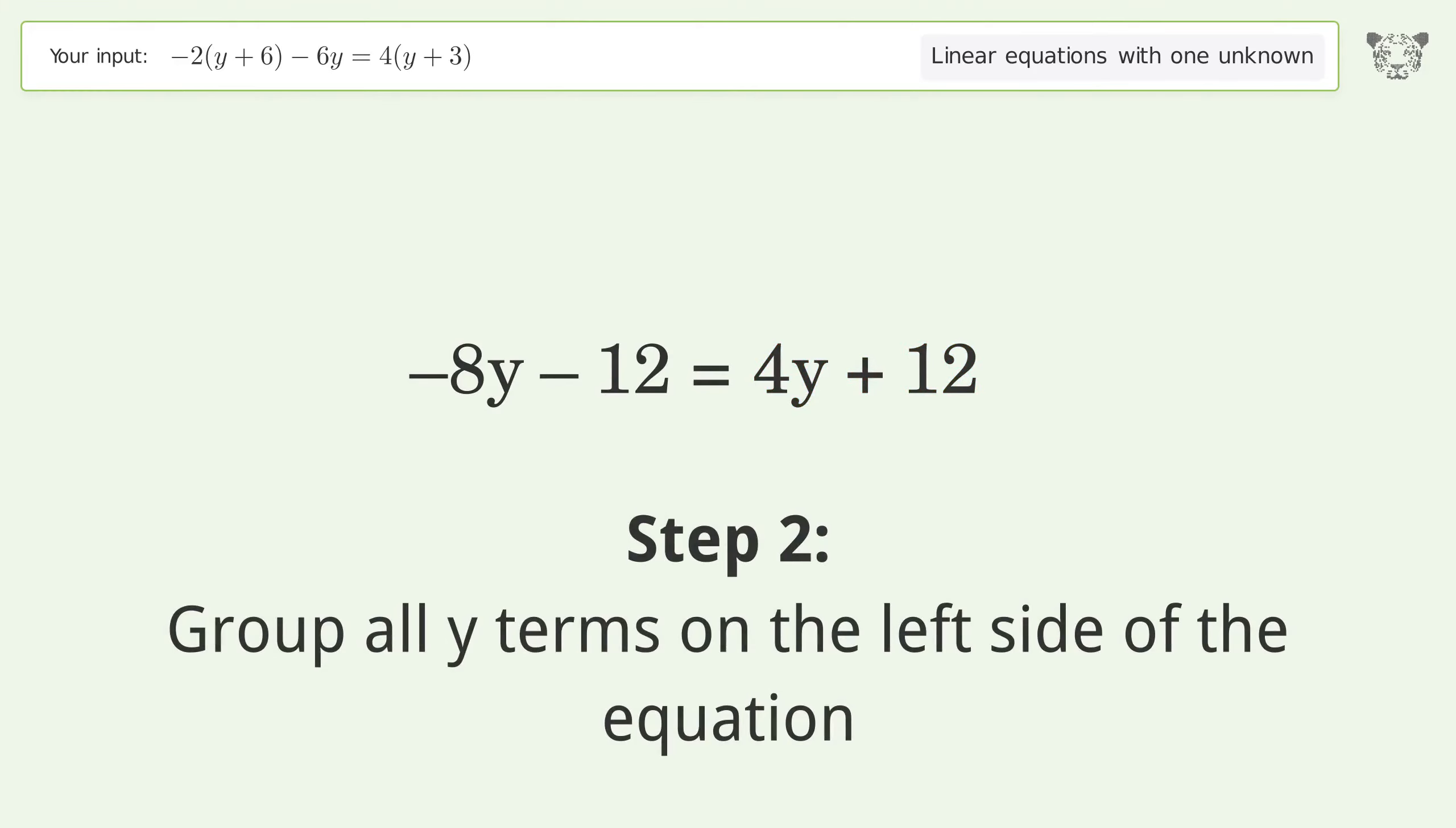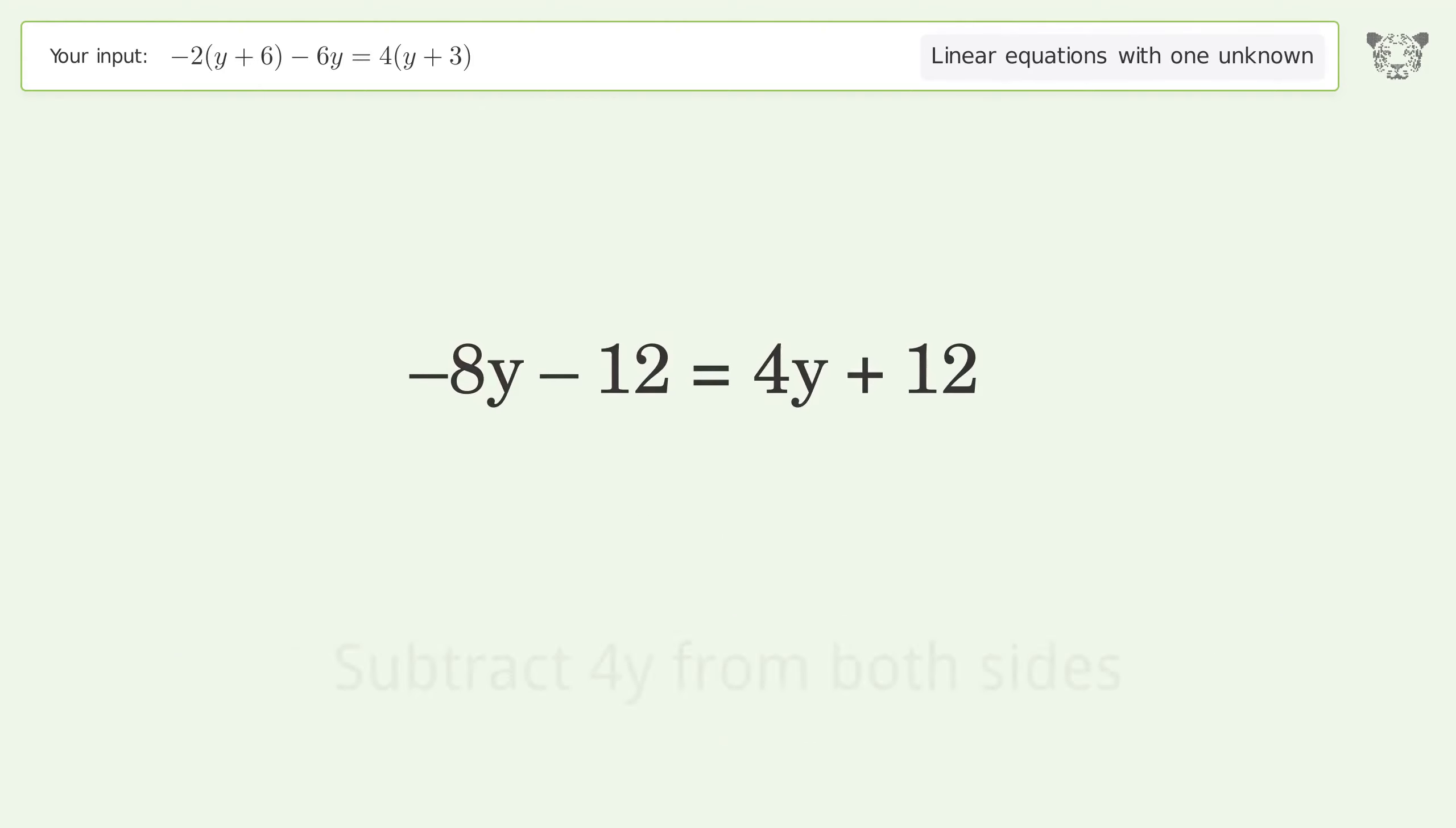Group all y terms on the left side of the equation. Subtract 4y from both sides. Group like terms. Simplify the arithmetic.